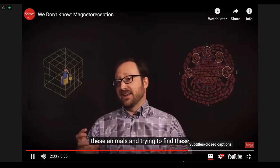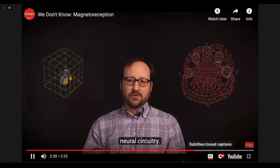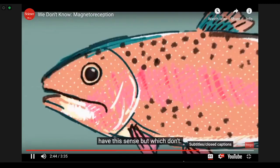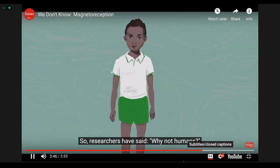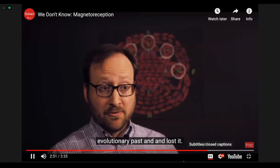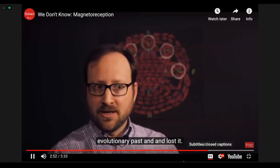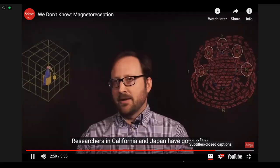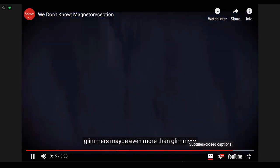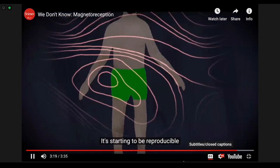So researchers have said, well why not humans? Maybe we had this sense at one point deep in our evolutionary past and lost it, but maybe there's a vestige left. Researchers in California and Japan have gone after this holy grail one more time, a very specialized experiment, one that relies on double blinding and magnetic shielding. And they're seeing glimmers, maybe even more than glimmers, of this magnetic sense in humans. It's starting to be reproducible and they're really excited about it.